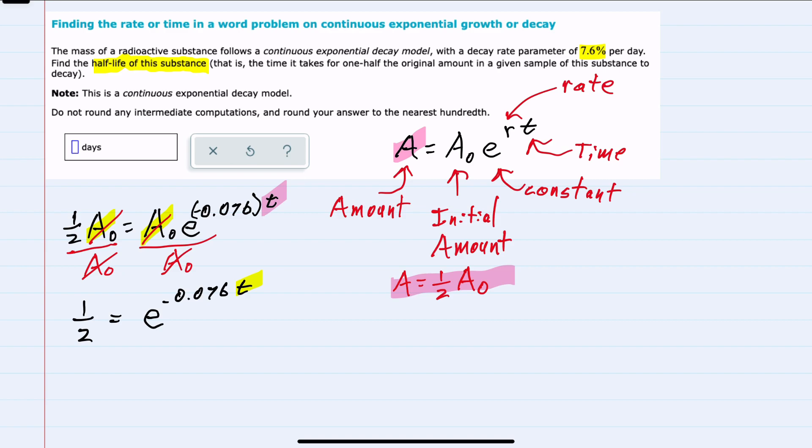Since our base is e, we can take the natural log of both sides, giving us ln of one half on the left-hand side. On the right-hand side, the ln of e to that exponent will cancel and leave us just the exponent.